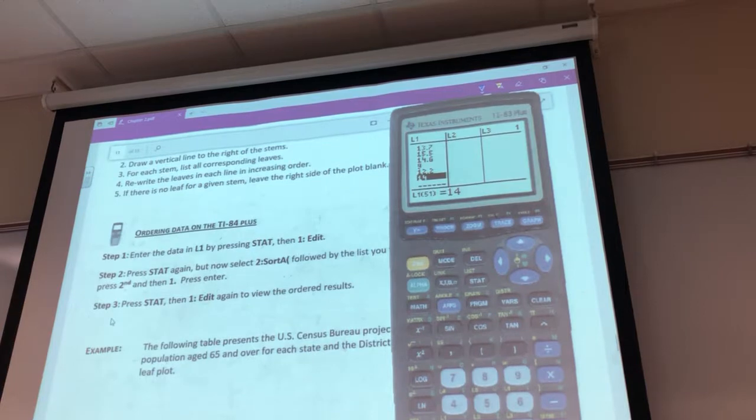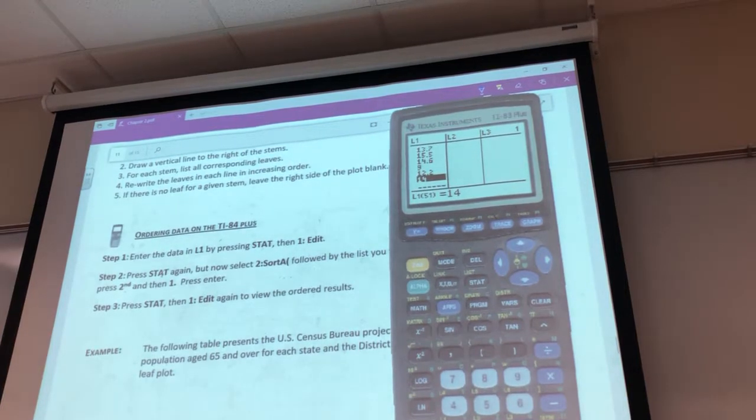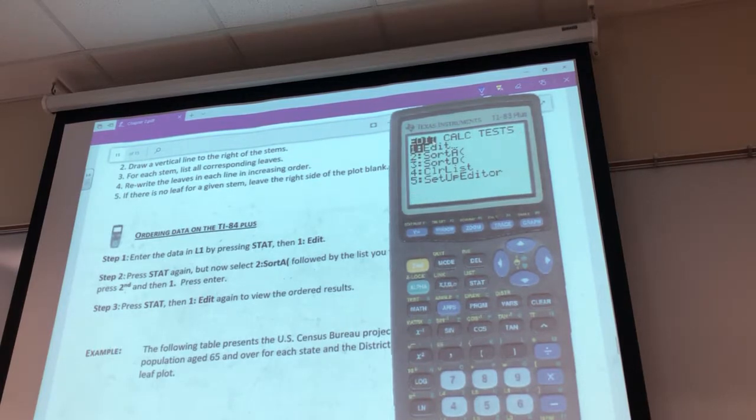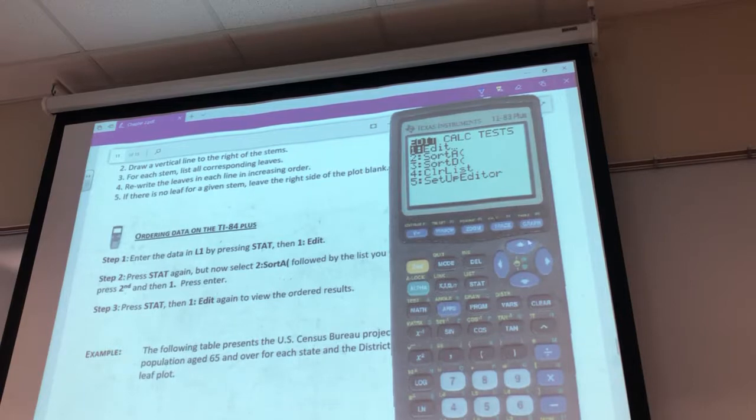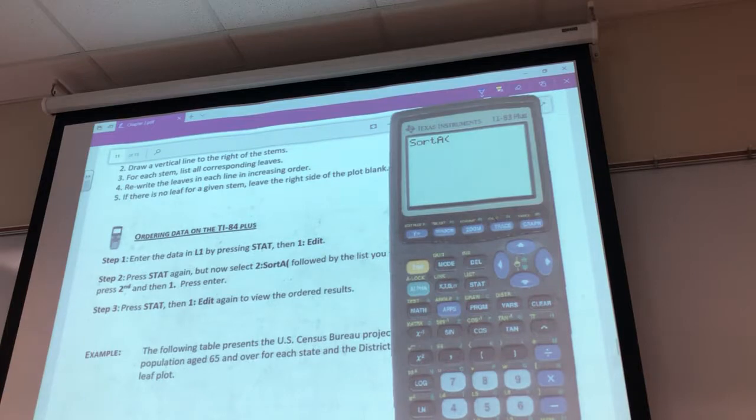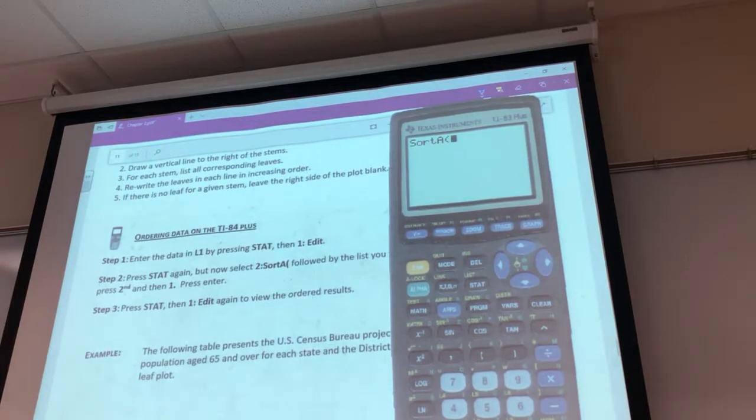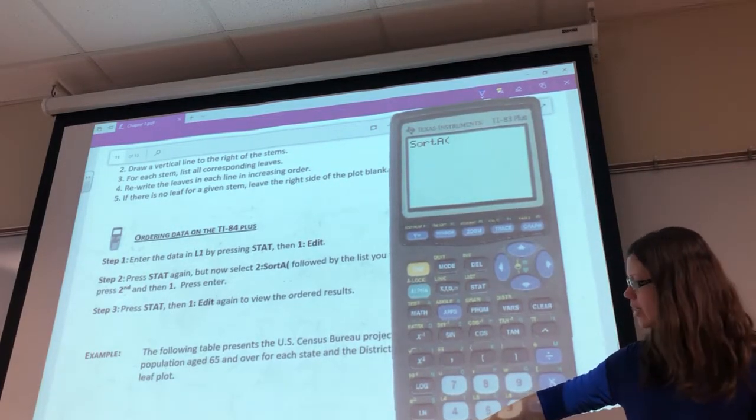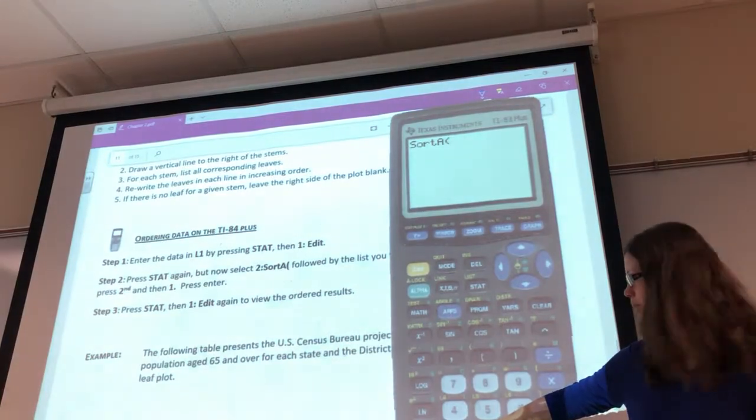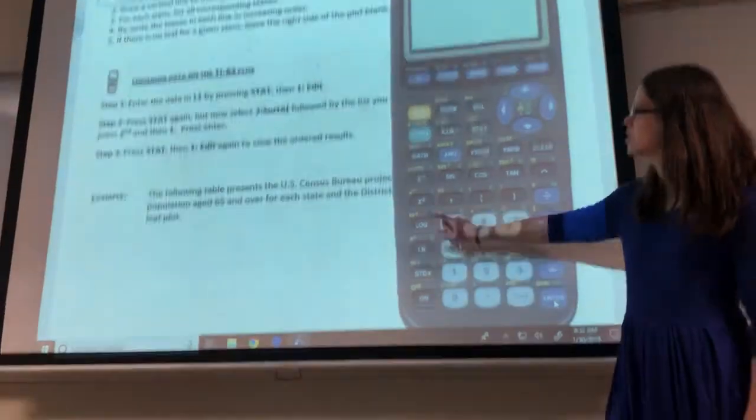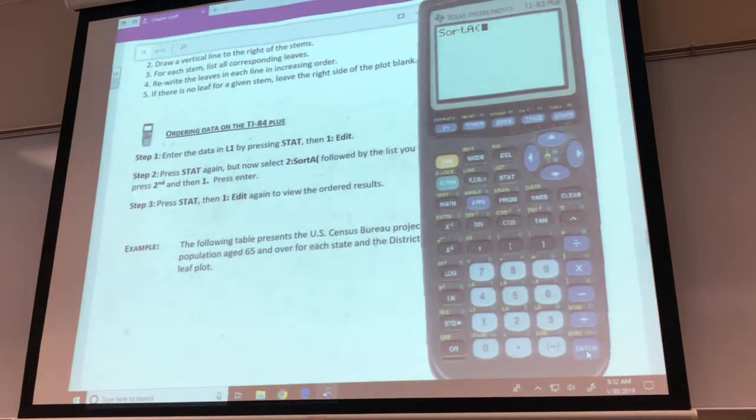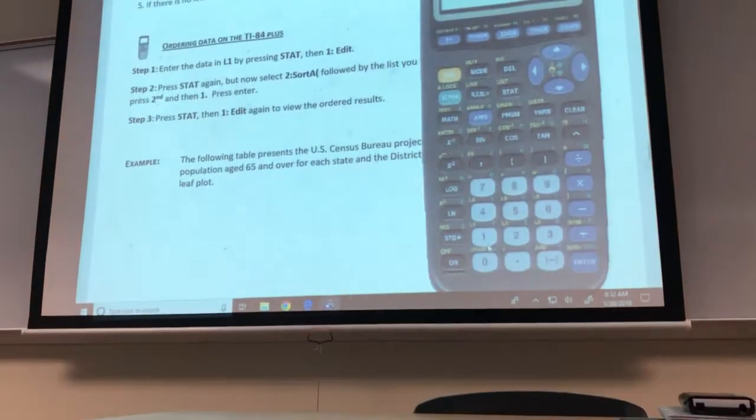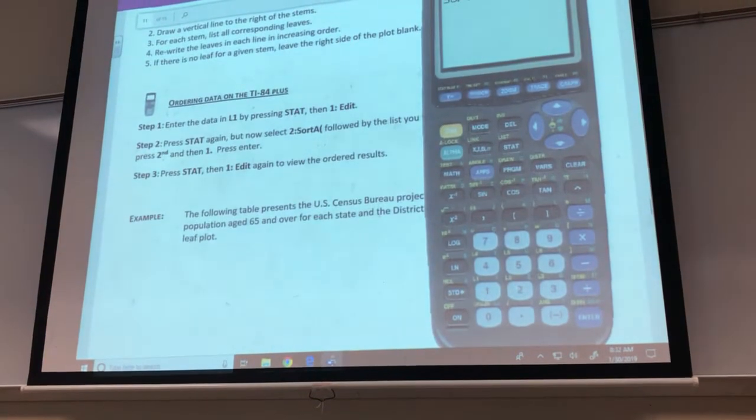So in order to put these in order, I'm going to follow these steps right here in step two. I'm going to start with going to stat again. You don't have to go back to the home screen. You can just push stat. And then under edit, now we're going to go down to number two, which is sort A. And that just means sort ascending. Enter. And then you have to tell it what you want to sort ascending. And for us, that's L1. If you look down here above your one, mine's in yellow, but it says L1 right here. That's the way for you to reference that first list that you put in. So I'll hit second one, and then L1 should show up on my screen.